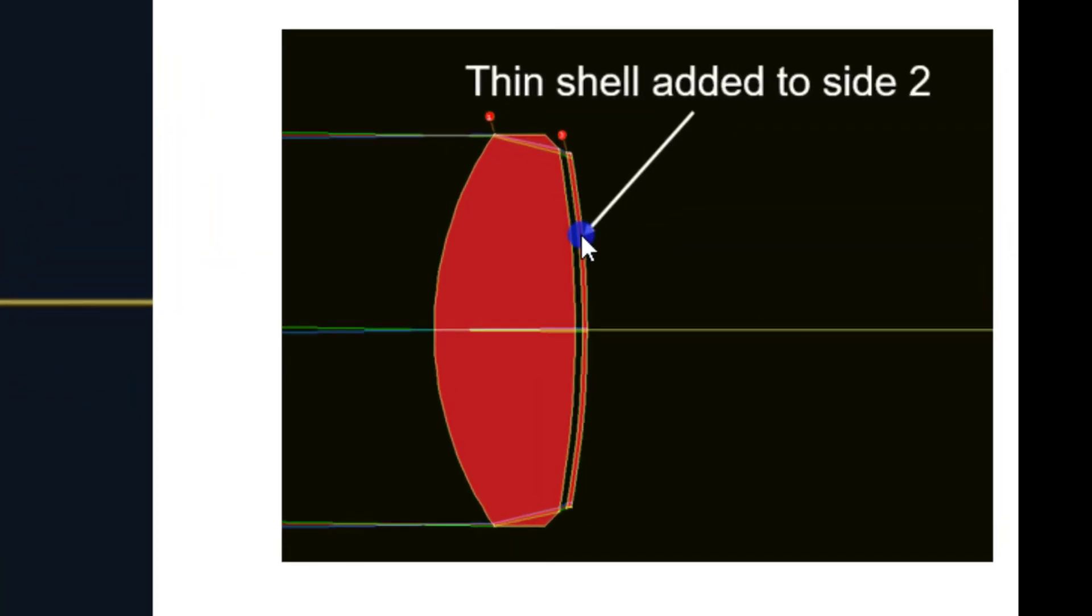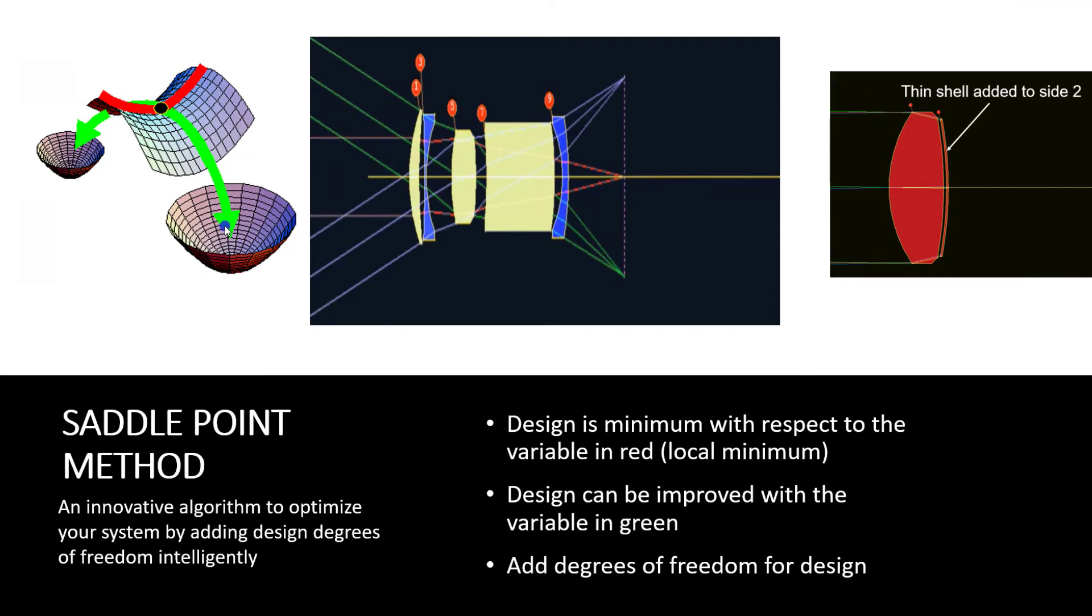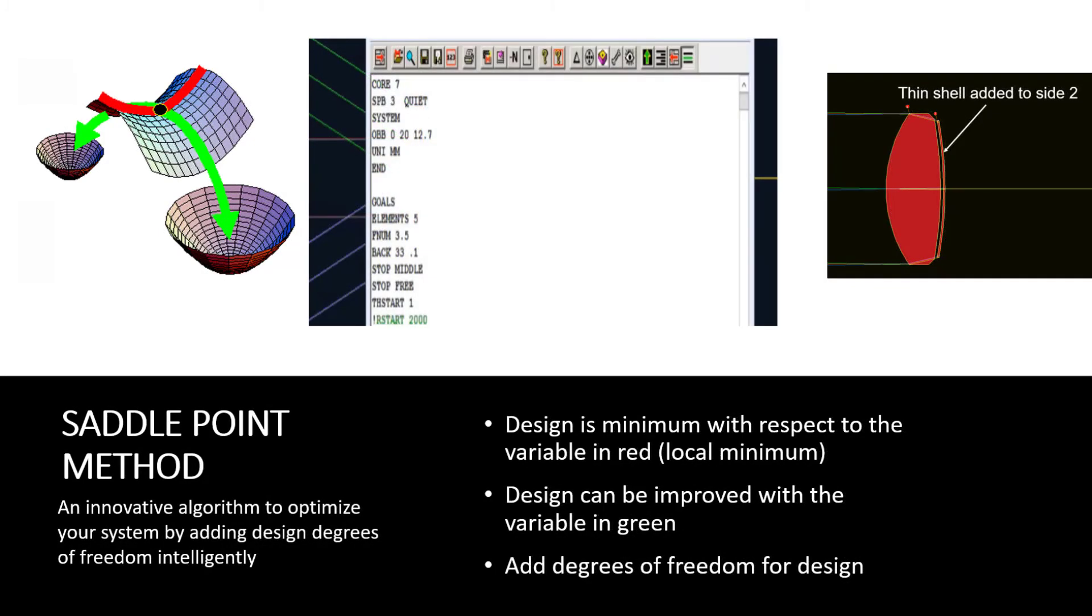By adding this thin shell to this element, it increases the degree of freedom to the design and thus allows the optimization to go in a different direction that may lead to a lower minimum. This is the concept behind the saddle point algorithm in Synopsys. Now let's see how it works.